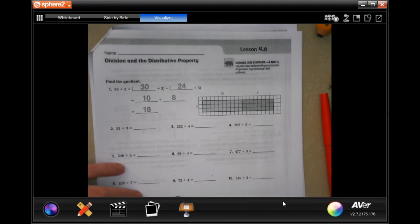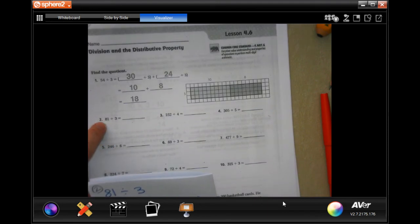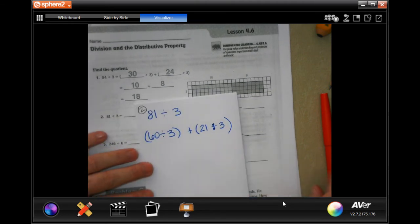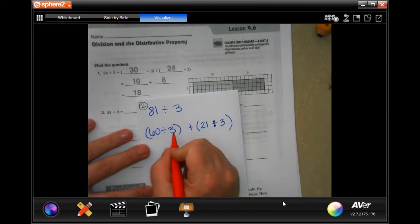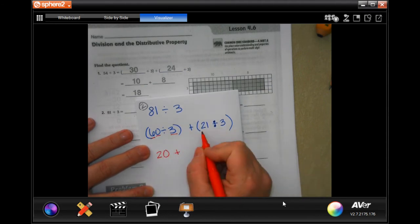So 81. Thinking of numbers that three goes into, well, three goes into 60 and three goes into 21. So that's how I broke it up. So three goes into 60, three goes into six twice, and I have that zero. So plus three goes into 21, seven times is 27.